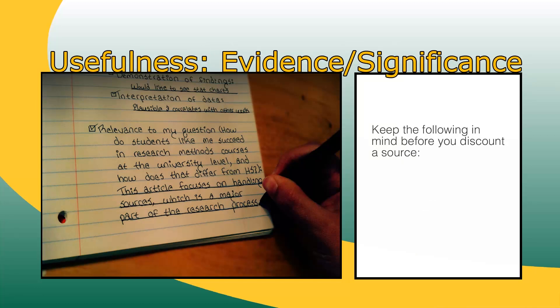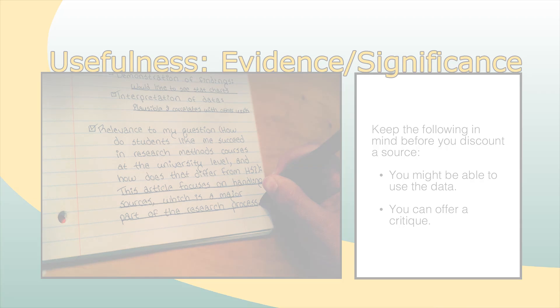Do not be too quick to discount a source, however. Even if it turns out that the argument is irrelevant to your question, could the data be of use? If so, just make sure you can confidently determine whether they were reliably collected before using them for your own analysis. Also, remember that you can offer a critique of the research methods or the quality of evidence in your discussion of an article so long as you think that the article is significant or otherwise of value in your research. Knowing a source well enough to evaluate it is an important part of the research process. The value of a source comes not only from how it relates to your own question, but also how it relates to your other sources.